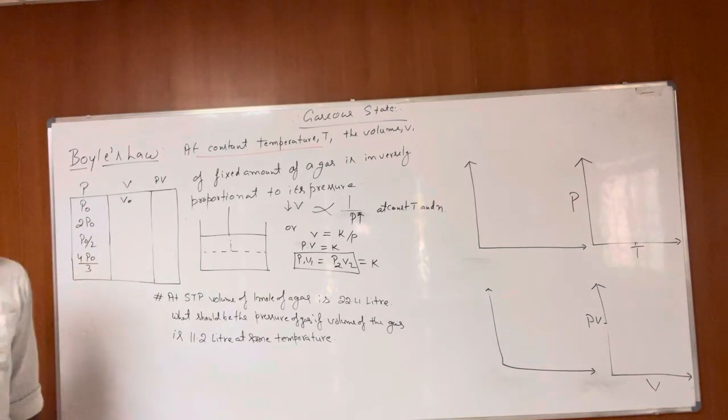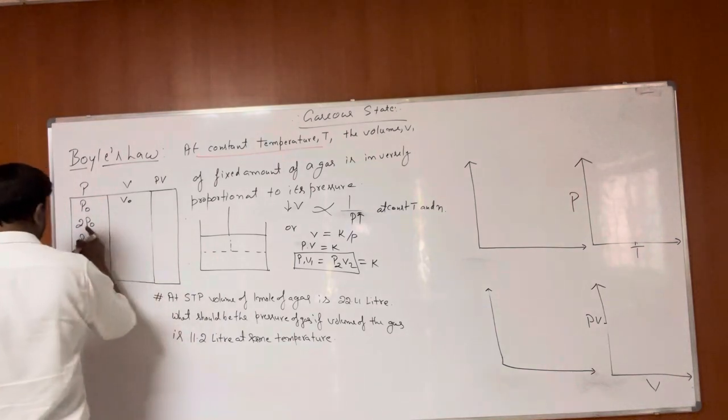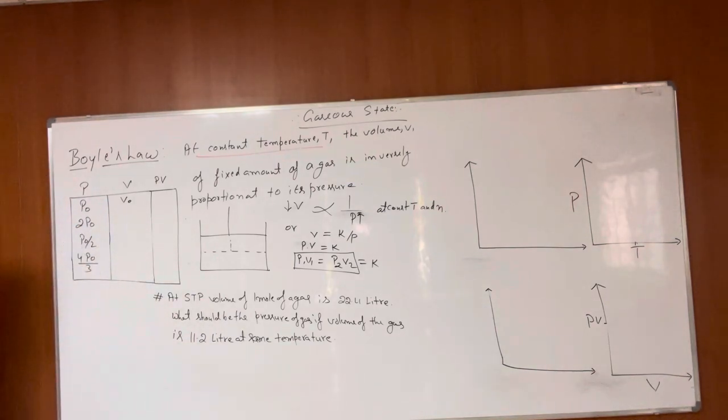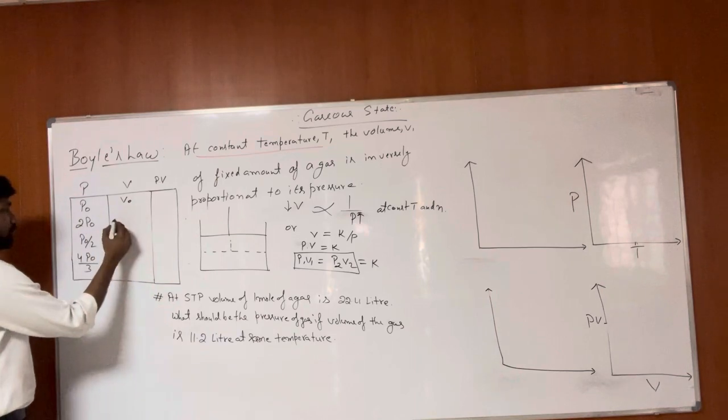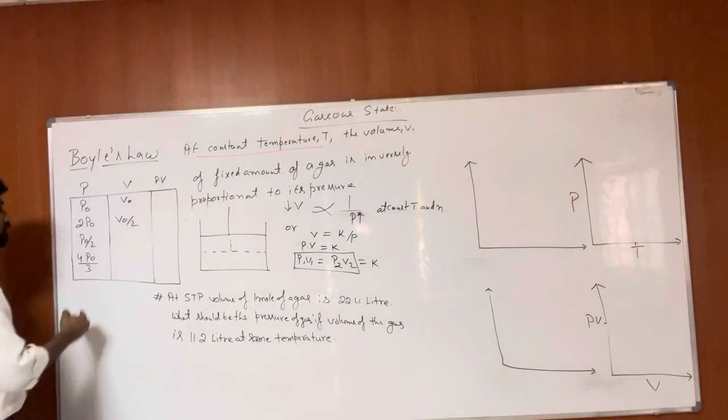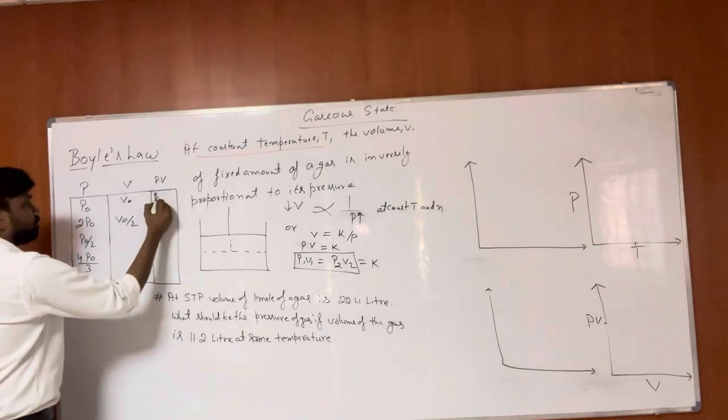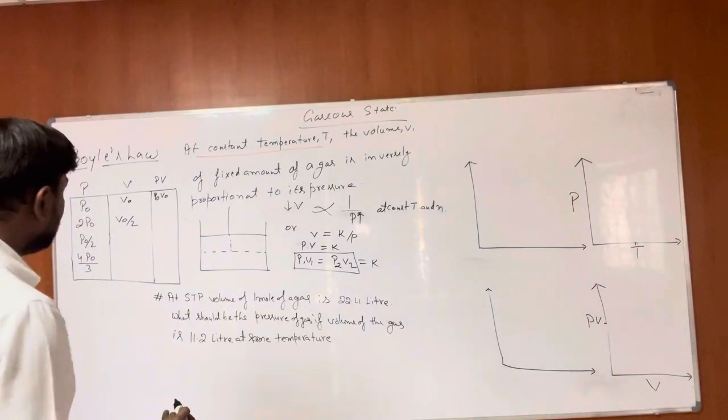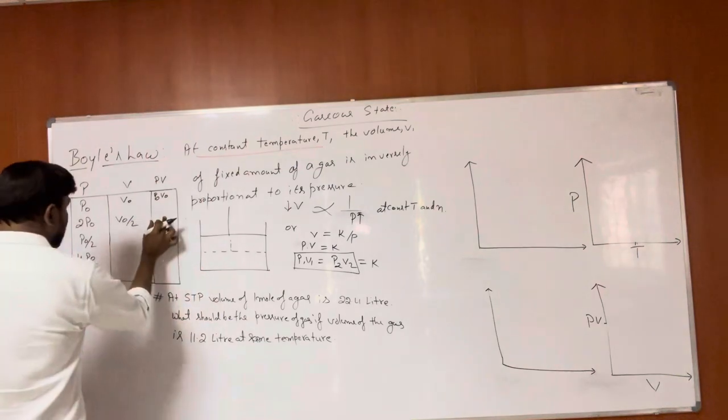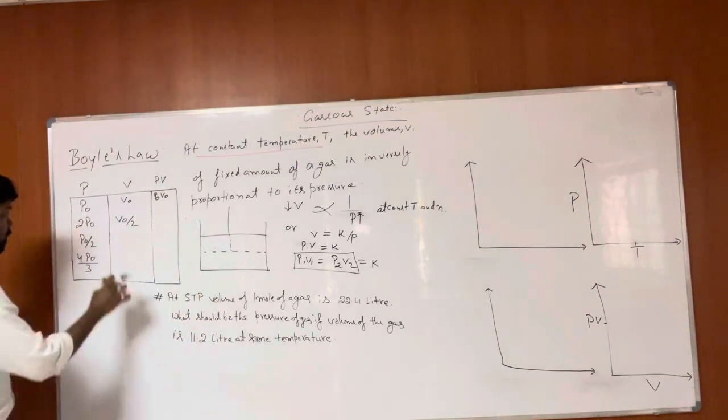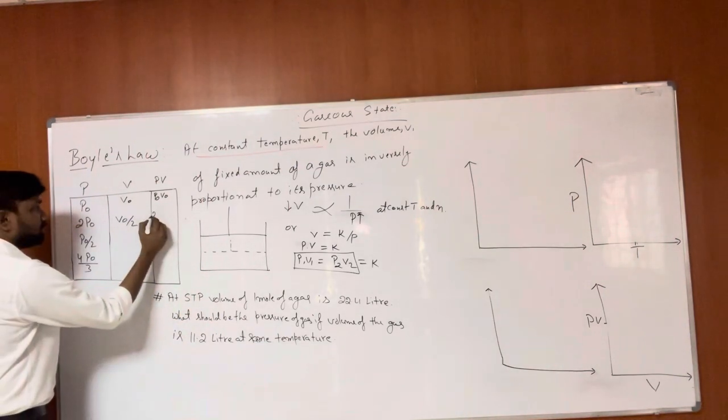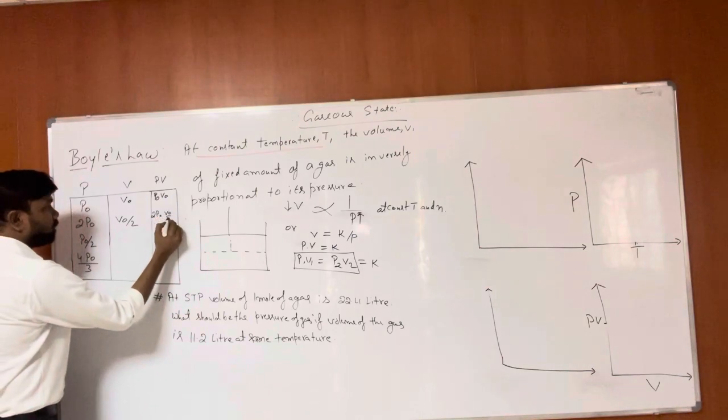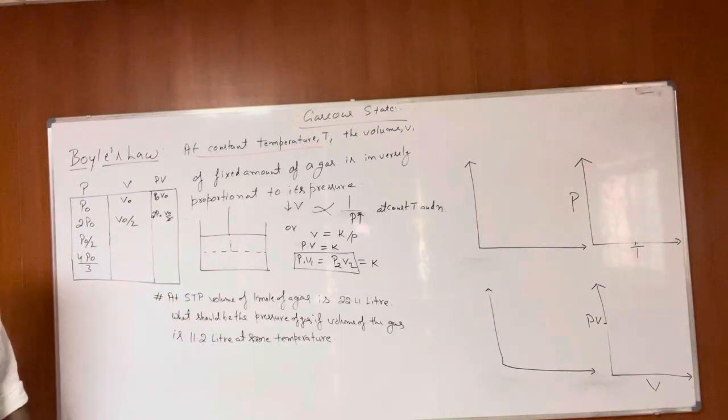Let's see a direct result. If the gas has initial pressure P0 and initial volume V0, what would be the volume if we double the pressure? Double pressure means volume will be half, because initially P0V0 equals the final product, so 2P0 times V0/2 gives the same product P0V0.